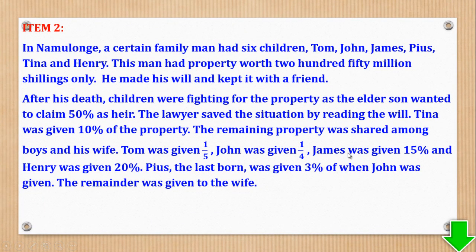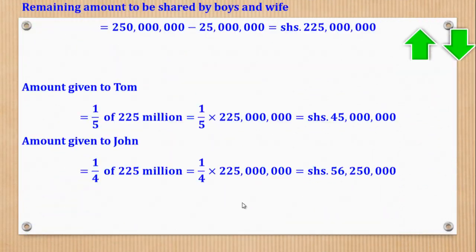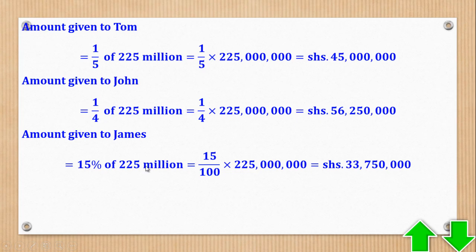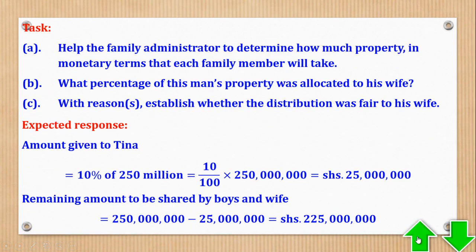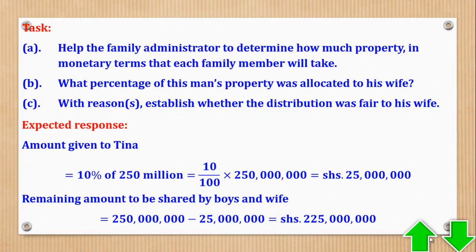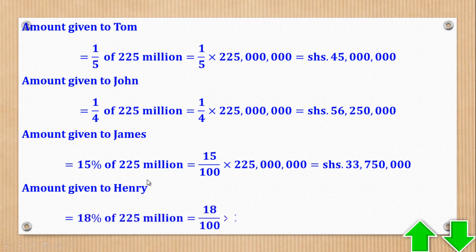Then from John, we go to James. James got 15%. So amount got by James is 15% of 225 million, which is 33 million 750 thousand. Then from James, we go to Henry, who was given 18%. So we'll come and get 18% of 225, which gives you 40 million 500 thousand shillings.